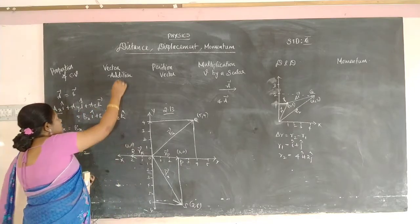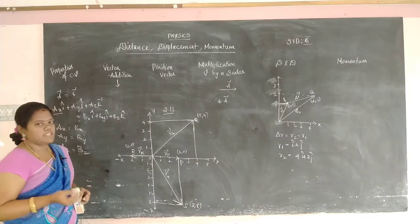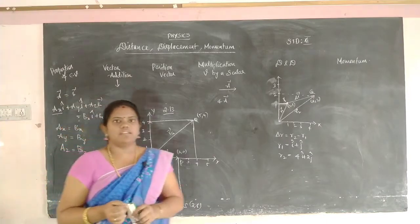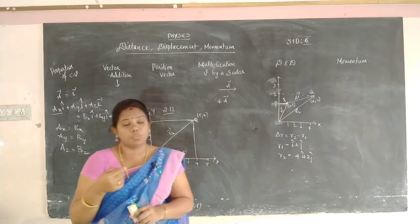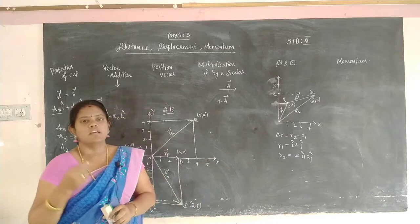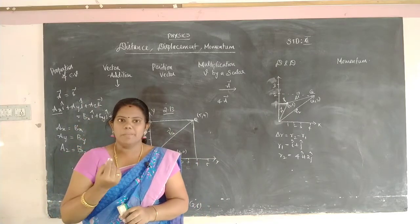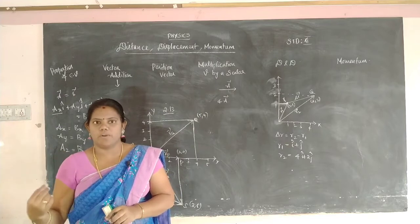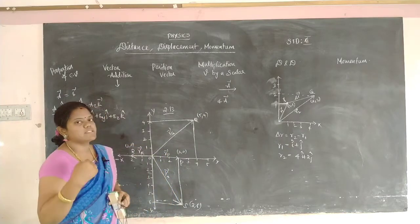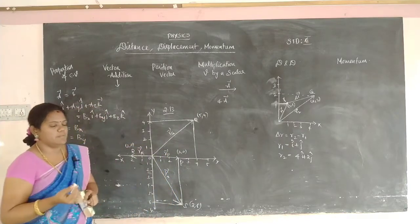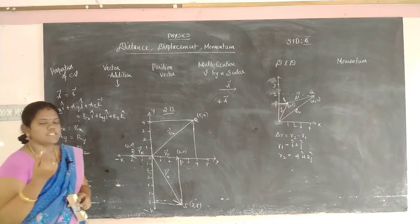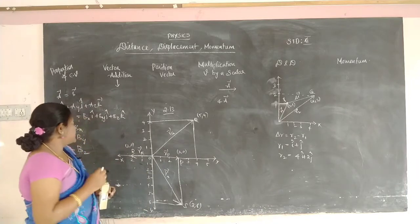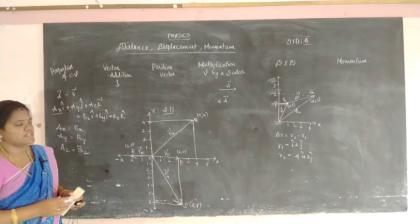Next we will go for vector addition. I already discussed how to add two vectors, how to subtract two vectors, and how to multiply by scalar product and vector product — all discussed in previous classes. But in today's session: how to add two vectors?